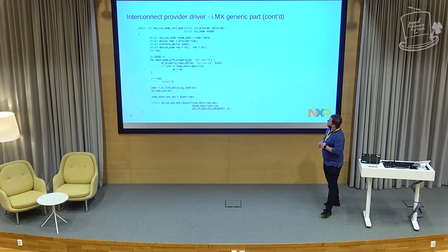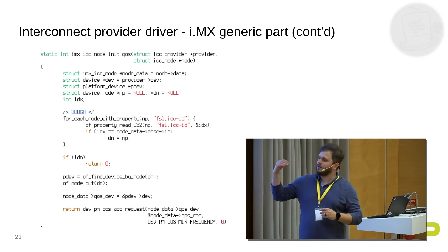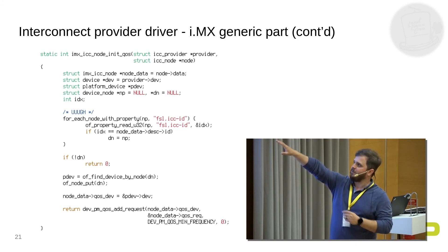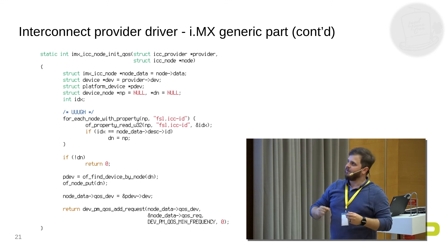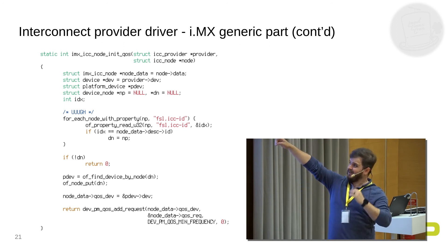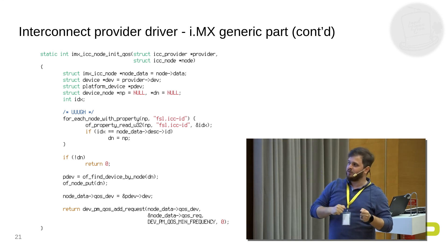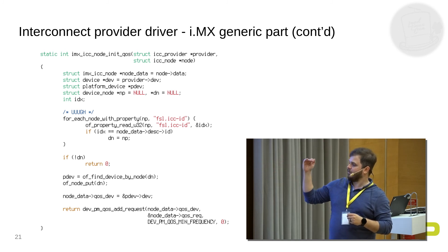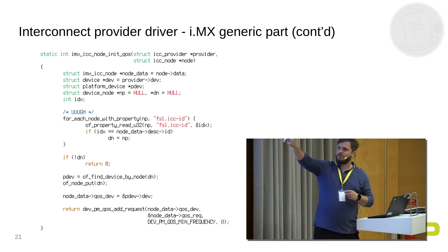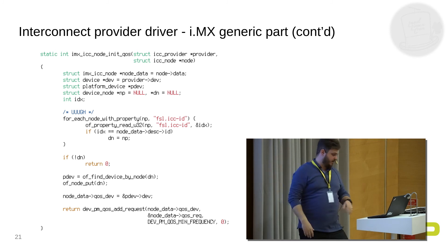In the IMX generic part, we're adding the provider, adding all the nodes, and registering each node. This is where things get complicated — you need a way to link the interconnect, which has its own device tree node, to each NOC or NIC. Previously it was registering a single interconnect for all nodes and only supported one NOC. But we have SOCs using 15 of them. The PMQOS initialization is the ugly part — I don't have a clean solution yet. We're searching through the whole device tree, and if a node has a specific property, we add the PMQOS request for minimum frequency.